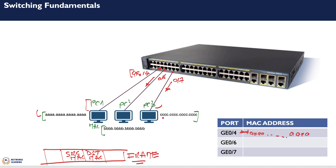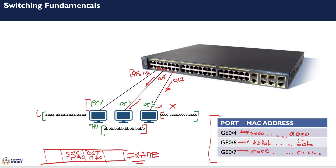When received by PC3, it sees the destination MAC address is not its own, so it discards the frame. PC2 receives the frame and responds back to PC1. The switch receives this return frame on interface gigabit 0/6 and creates another mapping — all B's mapped to gigabit 0/6. The process continues until the full mapping is built. When PC3 sends a frame, received on gigabit 0/7, another mapping is created for all C's.